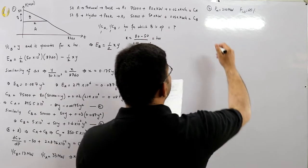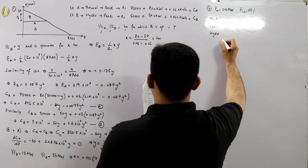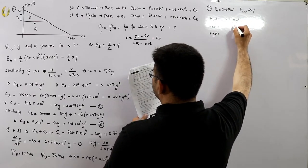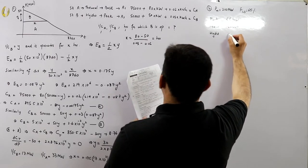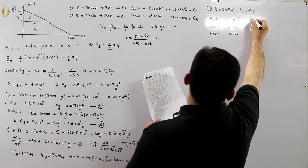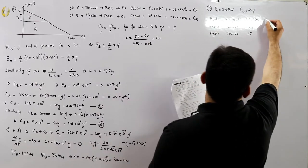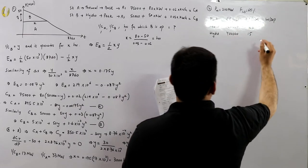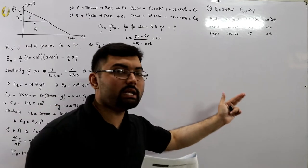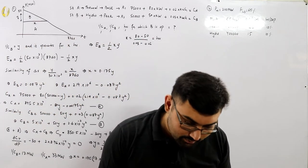The data given: capital cost per kilowatt of maximum demand is 1 lakh rupees (10⁵) for thermal and 4 lakhs (4 × 10⁵) for hydro. The operating cost per kilowatt hour is 20 paise for thermal and 15 paise for hydro. The interest and depreciation factor is 10% for both.